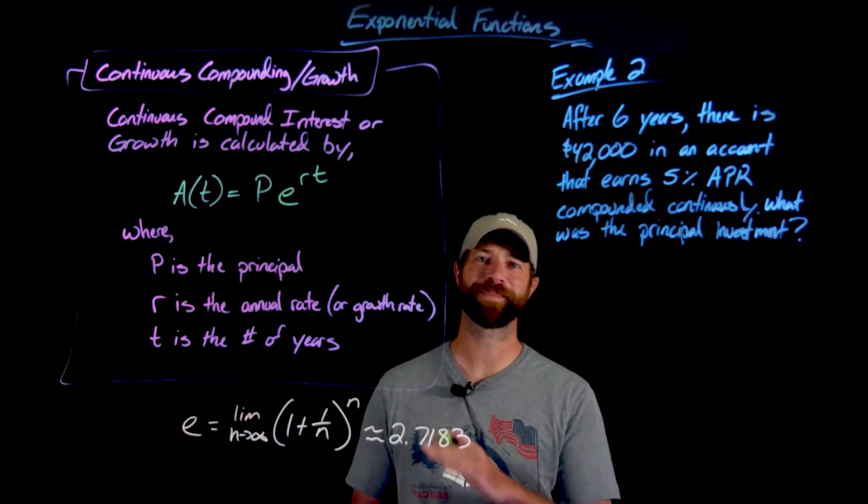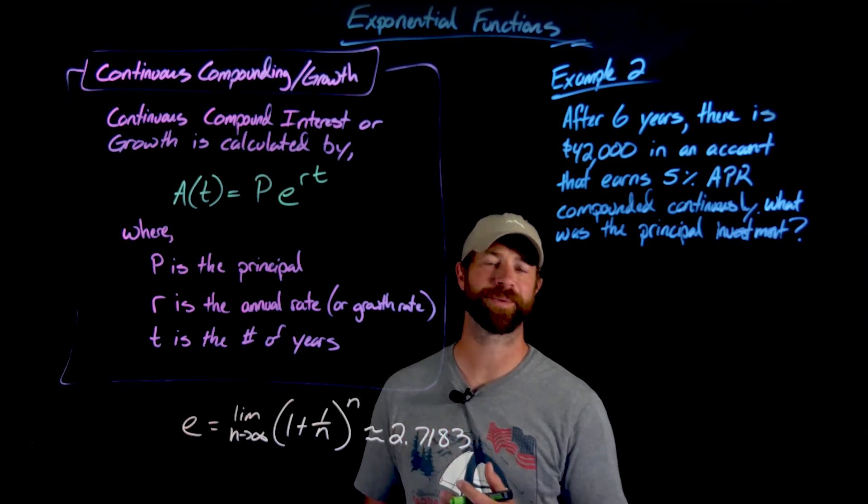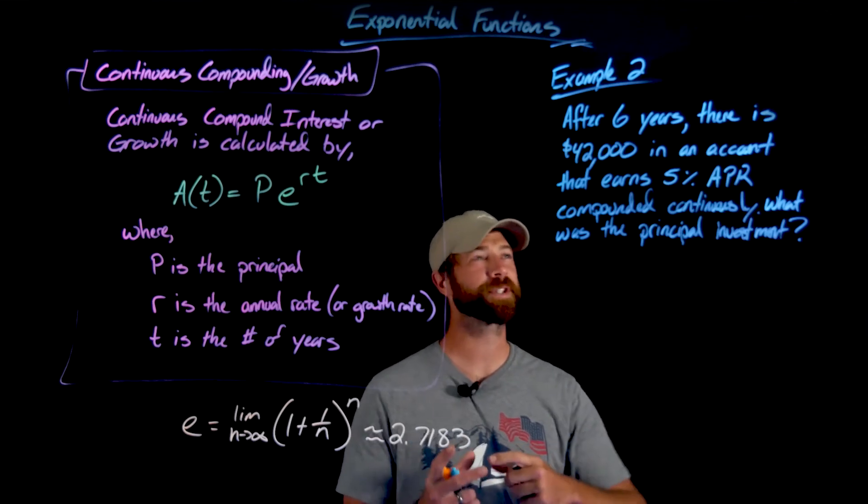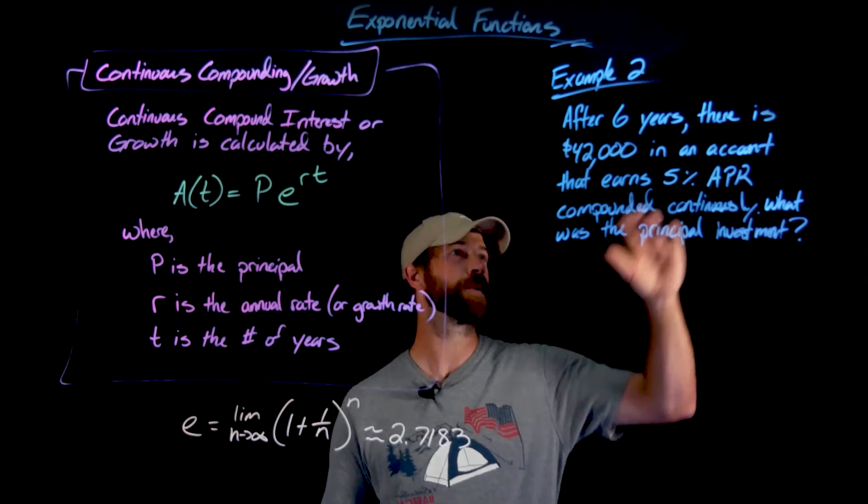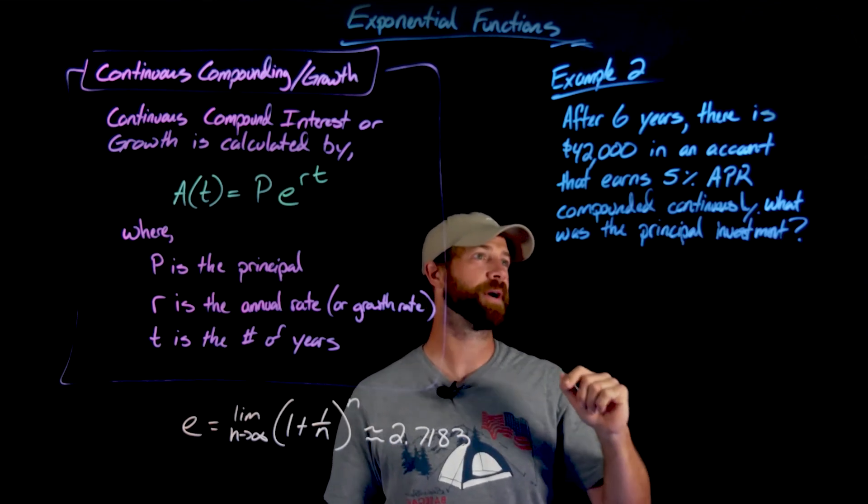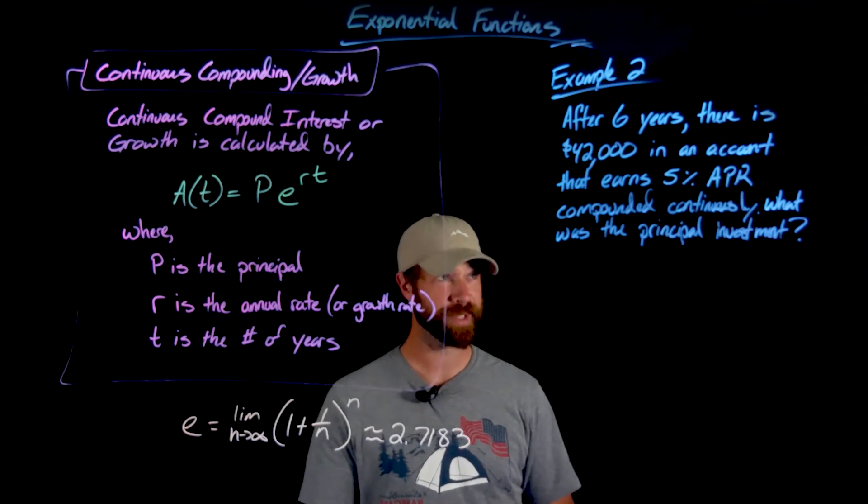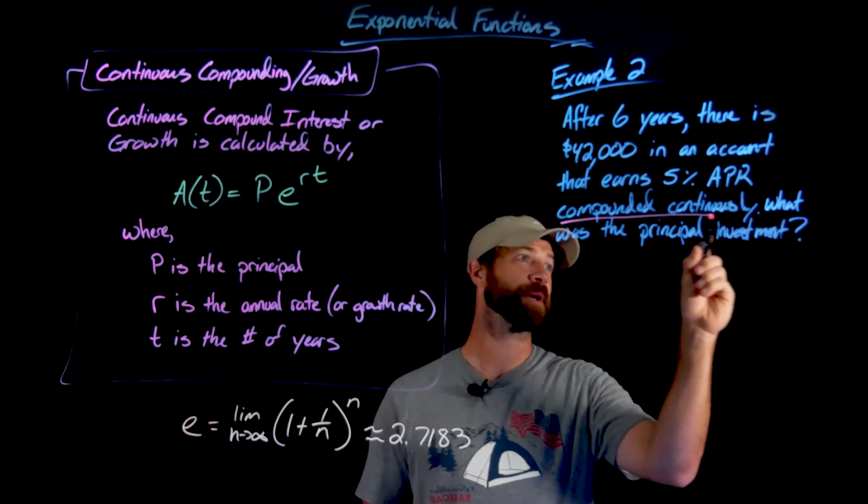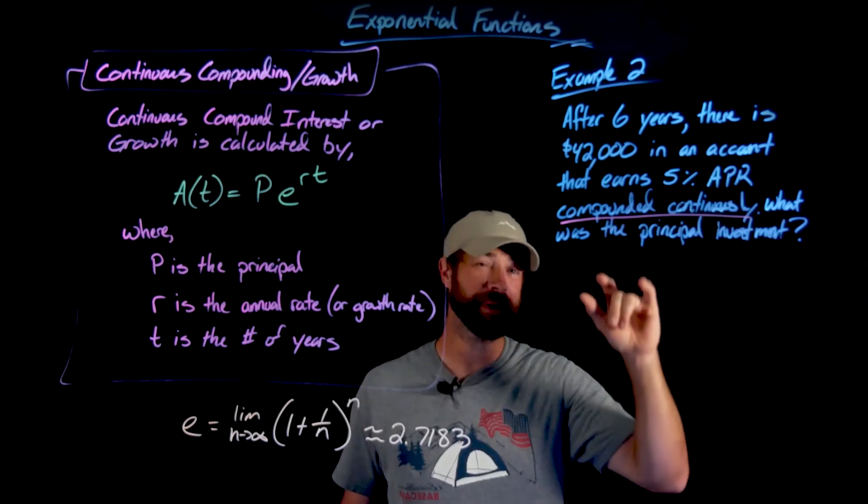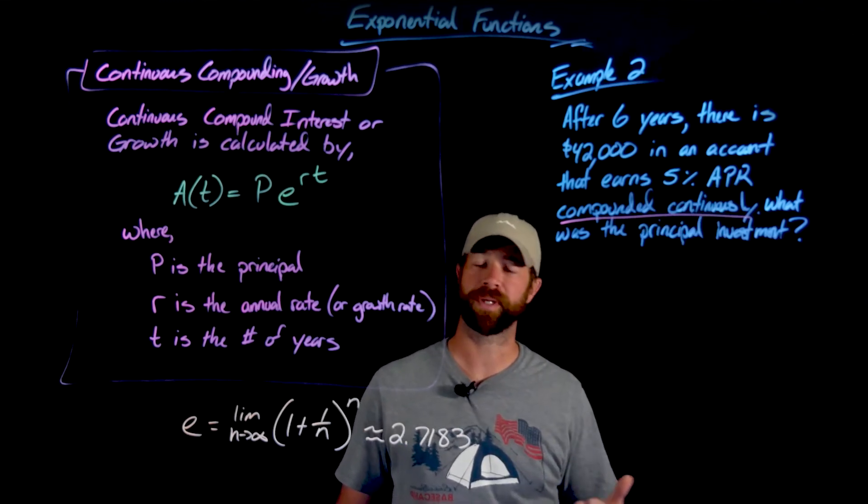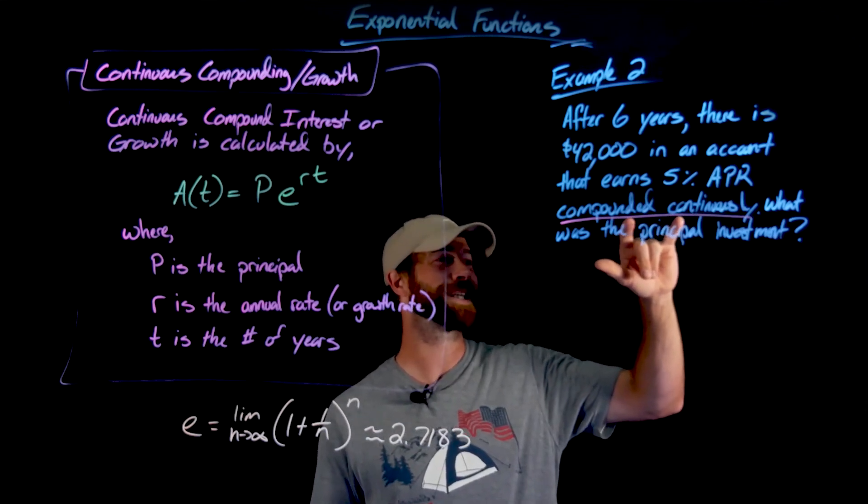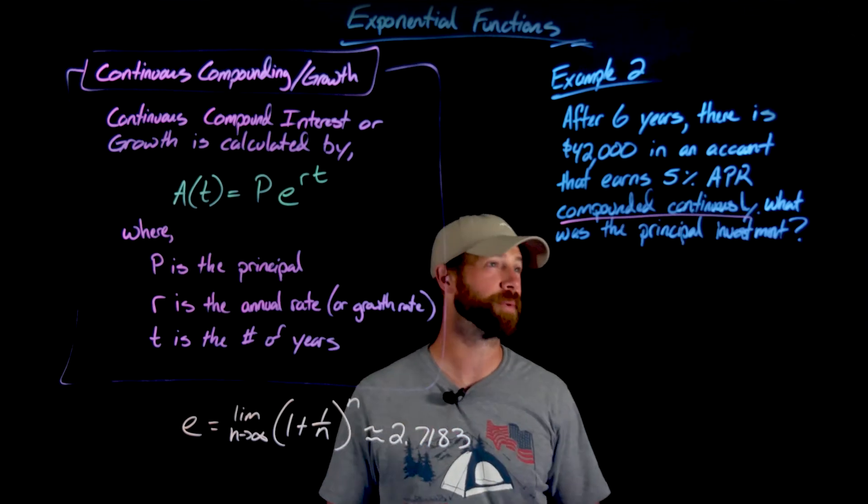Just so we can see an example of this continuous compounding or continuous growth formula in action, we have this example here. We're being told after six years of accruing interest, we now have $42,000 in the account and it earns 5% APR compounded continuously. This is the important thing for the situation that we're talking about. Again, we would expect to hear the annual rate and then be told how many compounding periods per year. Is it weekly? Is it monthly? Is it quarterly? In this case, we're compounding continuously, which means we're in the world of this formula right here.